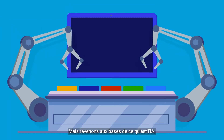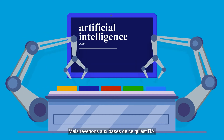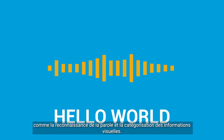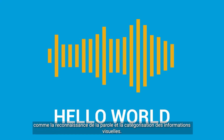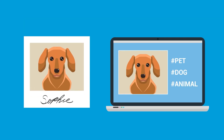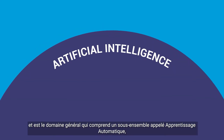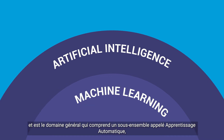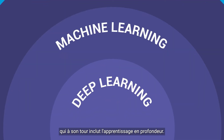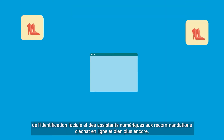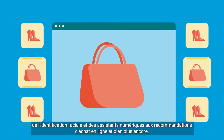Let's get back to the basics of where AI is today. In broad terms, AI is a computer's ability to perform tasks that normally require human intelligence, like recognizing speech and categorizing visual information. AI encompasses a much wider range of mechanisms and is the general field that includes a subset called machine learning, which in turn includes deep learning. AI algorithms are all around us, from Face ID and digital assistants to online shopping recommendations and so much more.